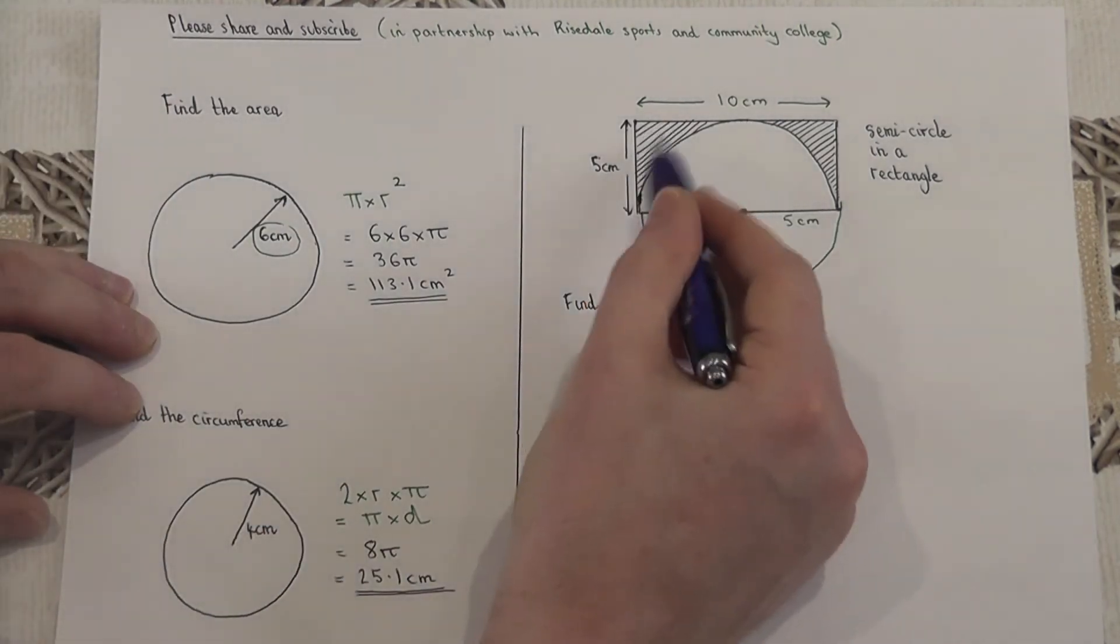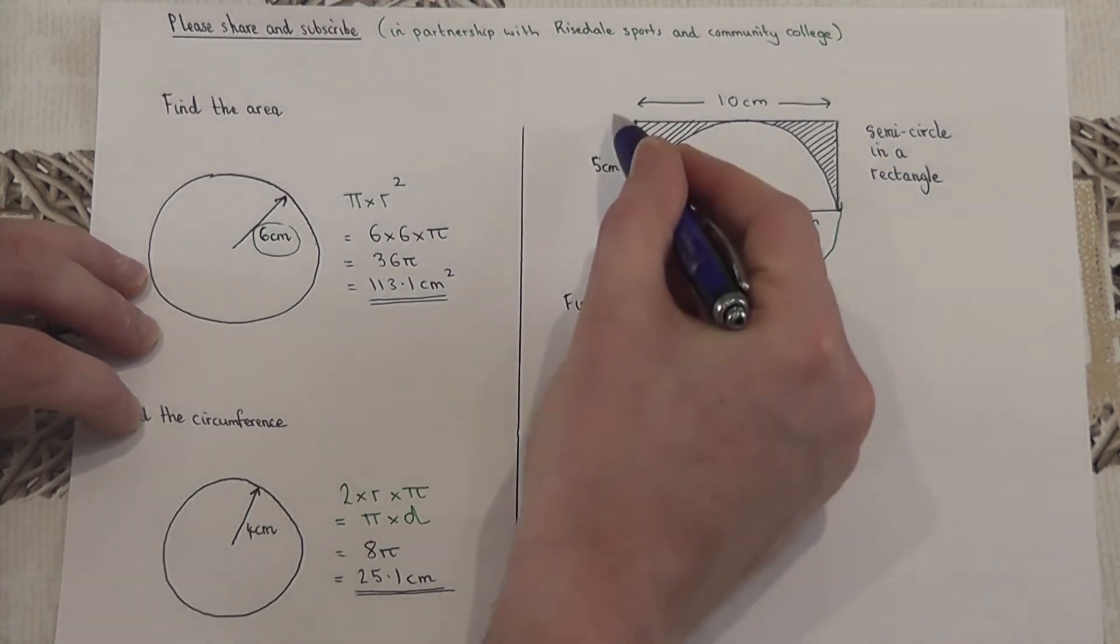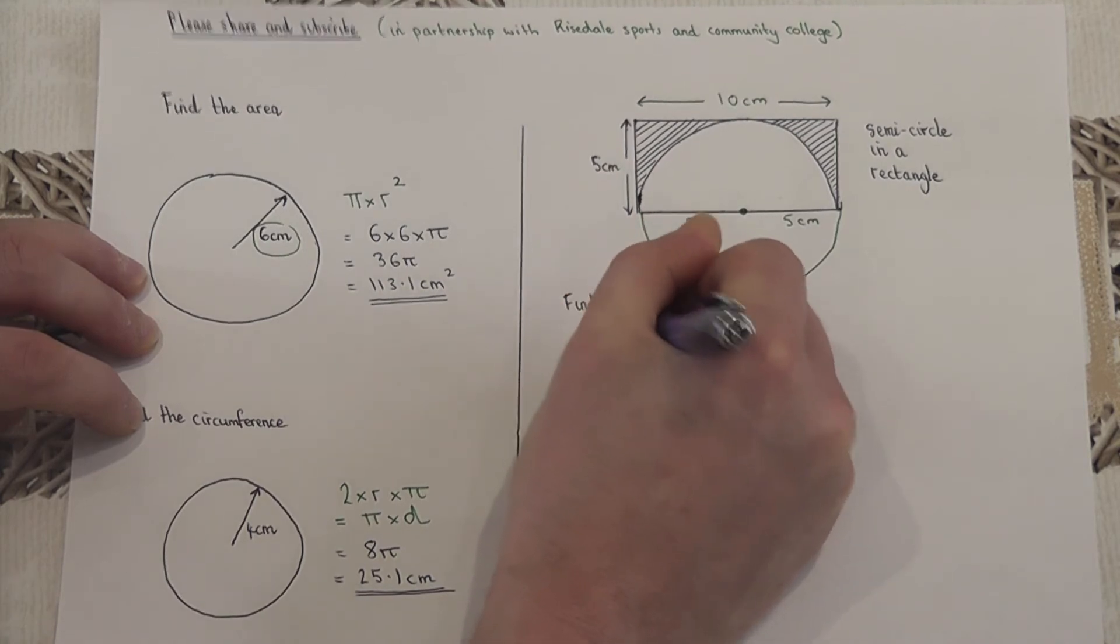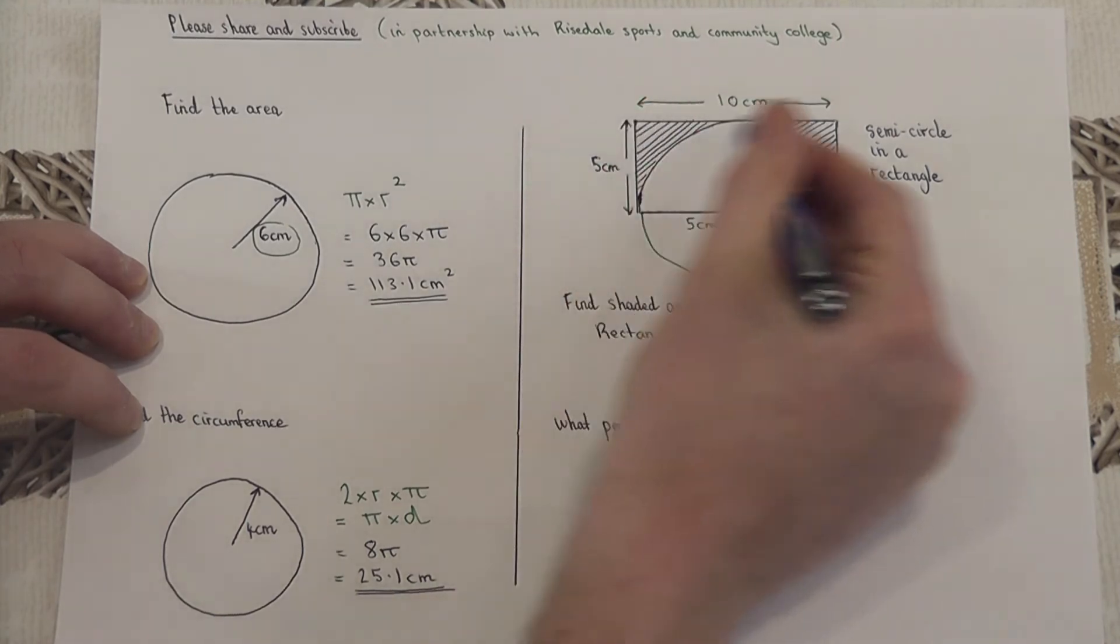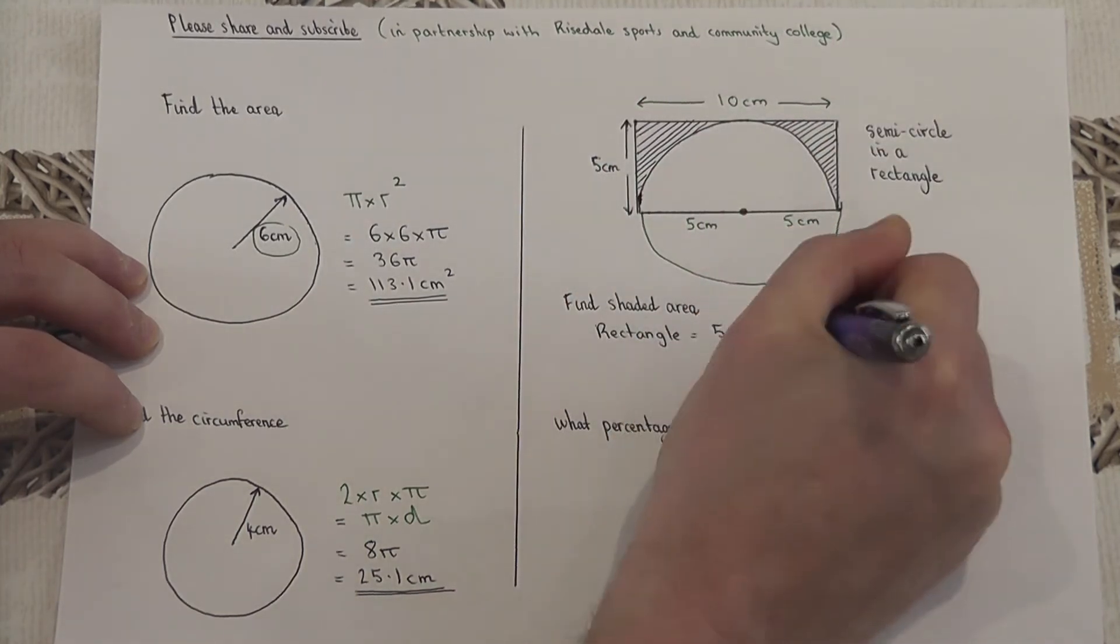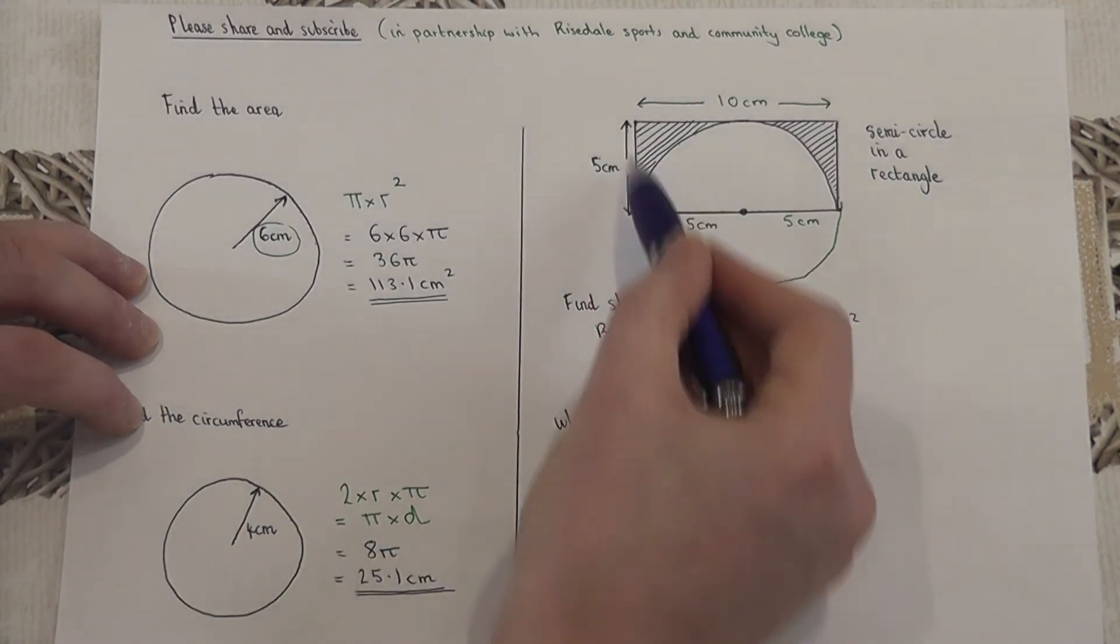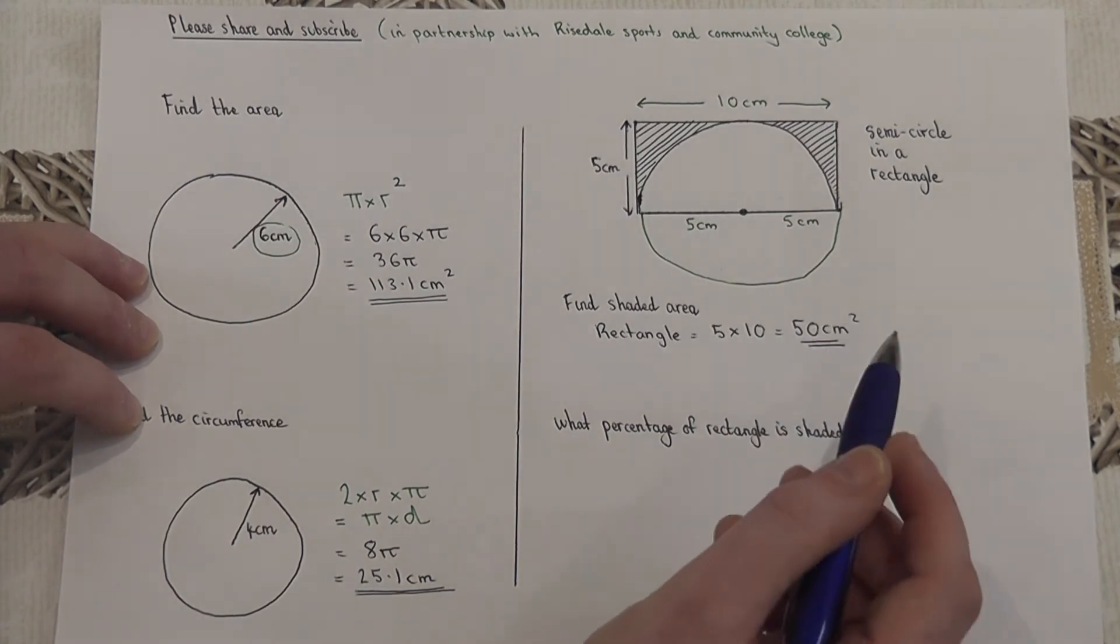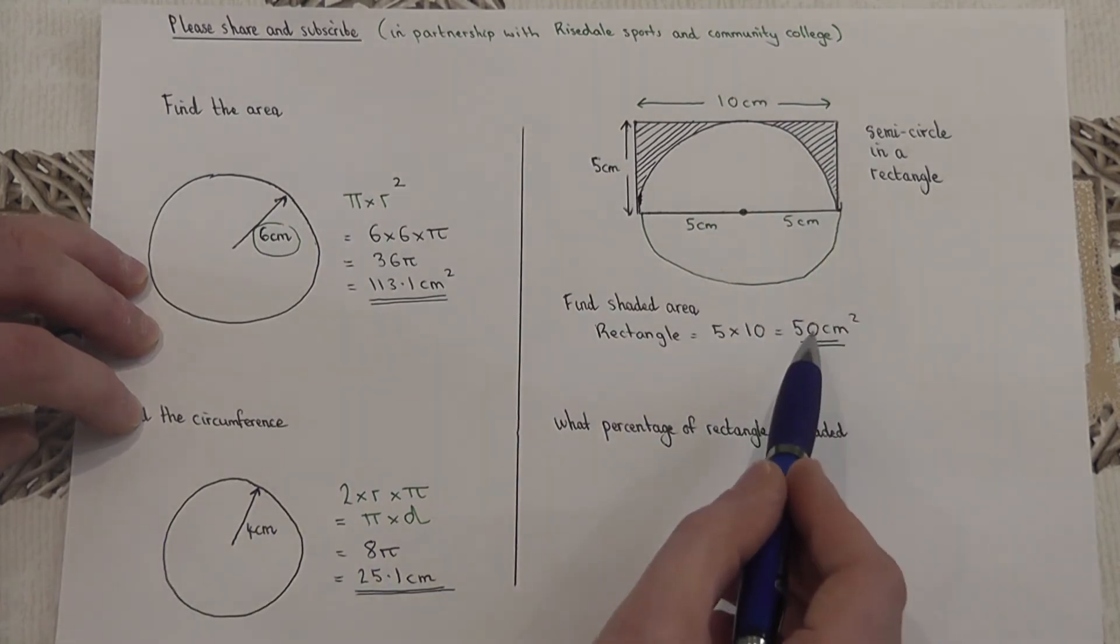Now then, to find out the shaded area, I want to first of all find the area of this entire rectangle. Now for the rectangle, that is quite simply 5 multiplied by 10, which is 50 centimeters squared. Because we understand that because that is 5, the entire width across the entire circle must therefore be 10 centimeters. So this rectangle here has got an area of 50.